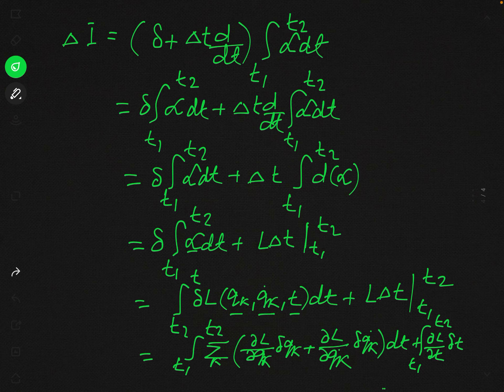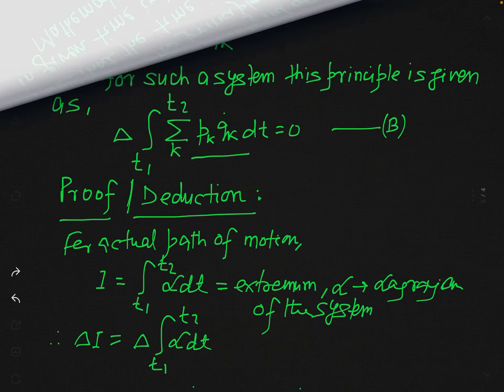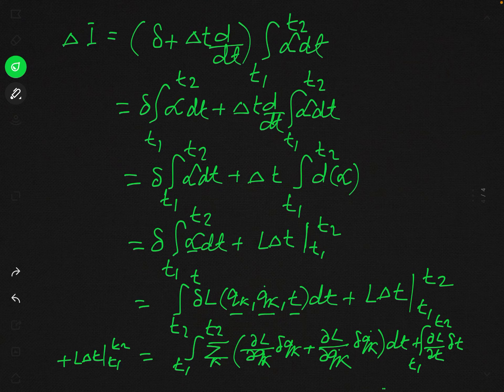After substituting the Lagrange equation, delta I equals delta integral of L from t1 to t2, which equals integral from t1 to t2 of summation over k of [d/dt (del L / del q_k dot) delta q_k plus (del L / del q_k dot) delta q_k dot] dt, plus L capital delta T at limits t1 and t2. Note that delta q_k dot may be written as d/dt (delta q_k).